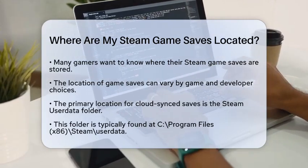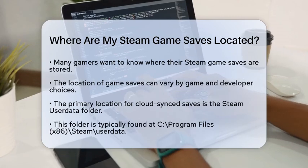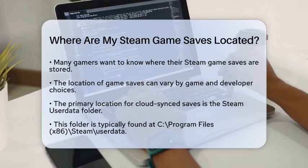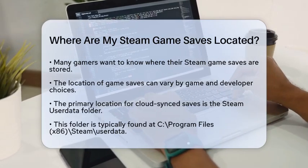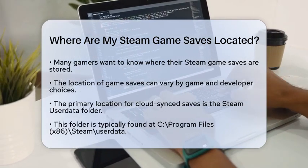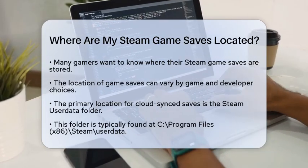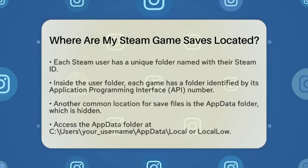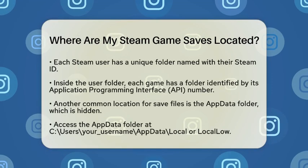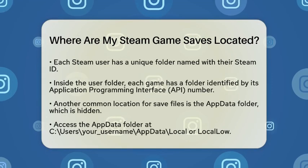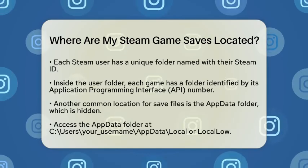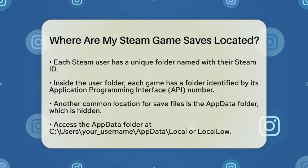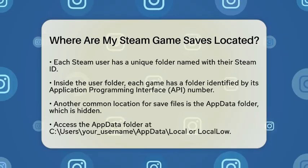First, the primary location for Steam Cloud Sync save files is in the Steam User Data folder. You can find this folder in the Steam installation directory, typically located at C:\Program Files (x86)\Steam\userdata. Inside this folder, each Steam user account has a unique folder named with their Steam ID. Within your user folder, each game has a folder named by its unique application ID number, which is a numeric identifier for each game. This is where Steam keeps your cloud save files if you have enabled Steam Cloud Synchronization.